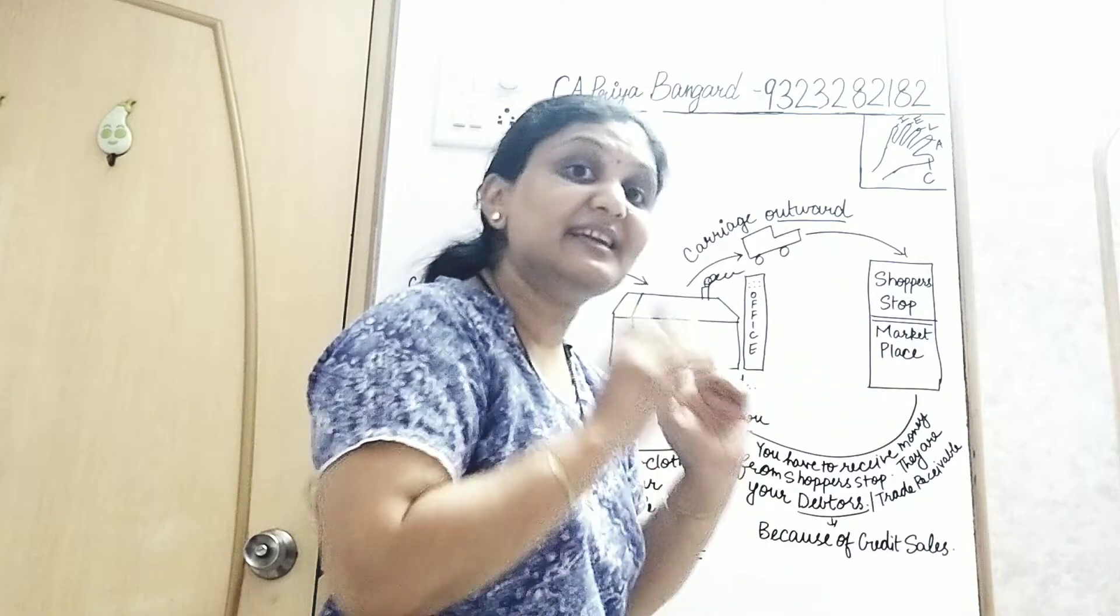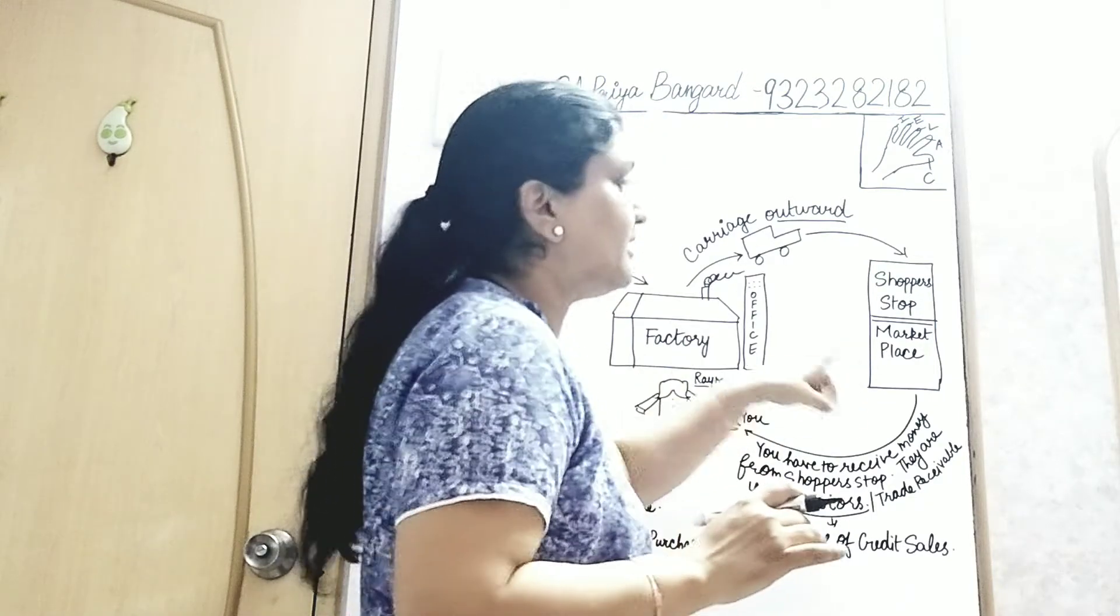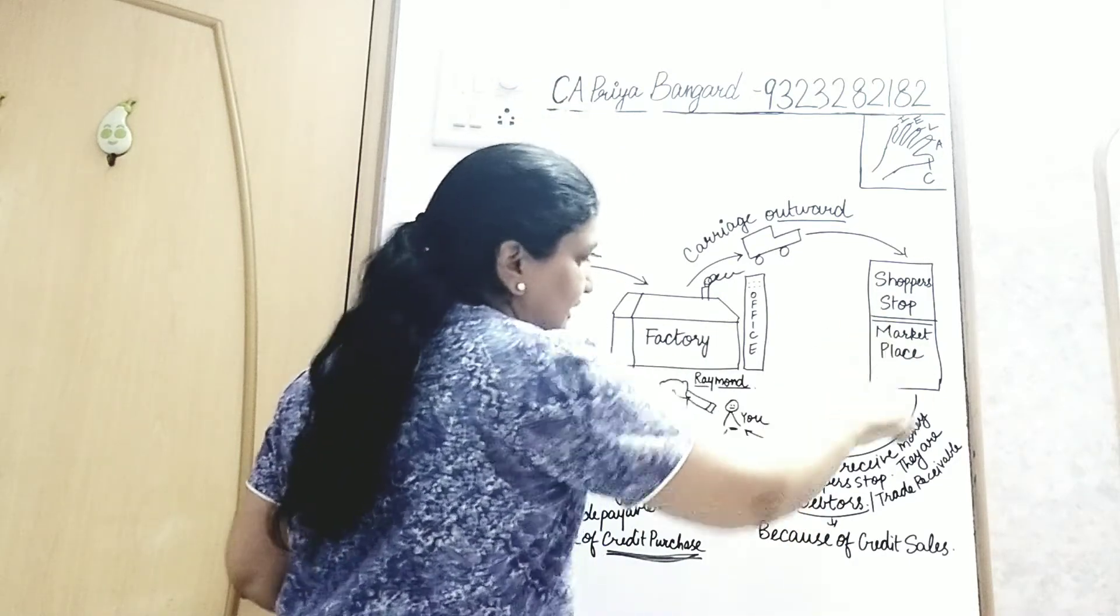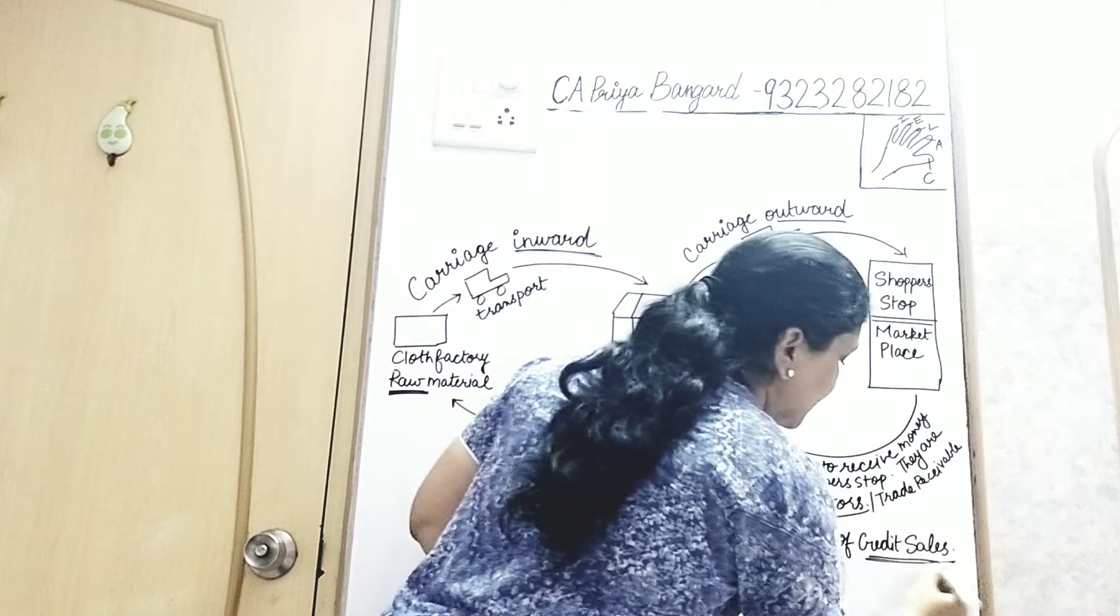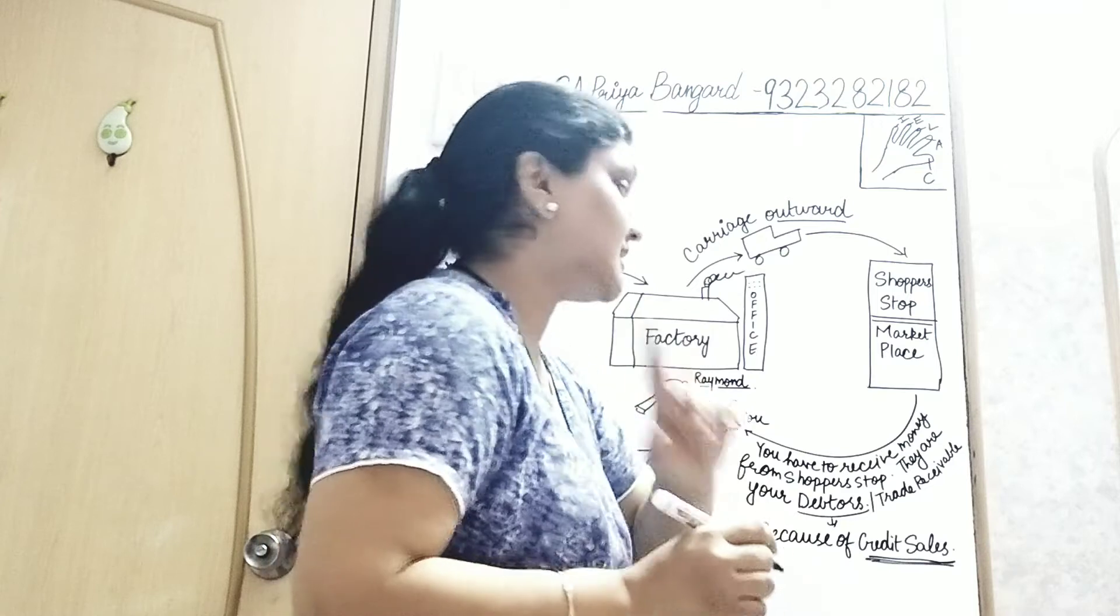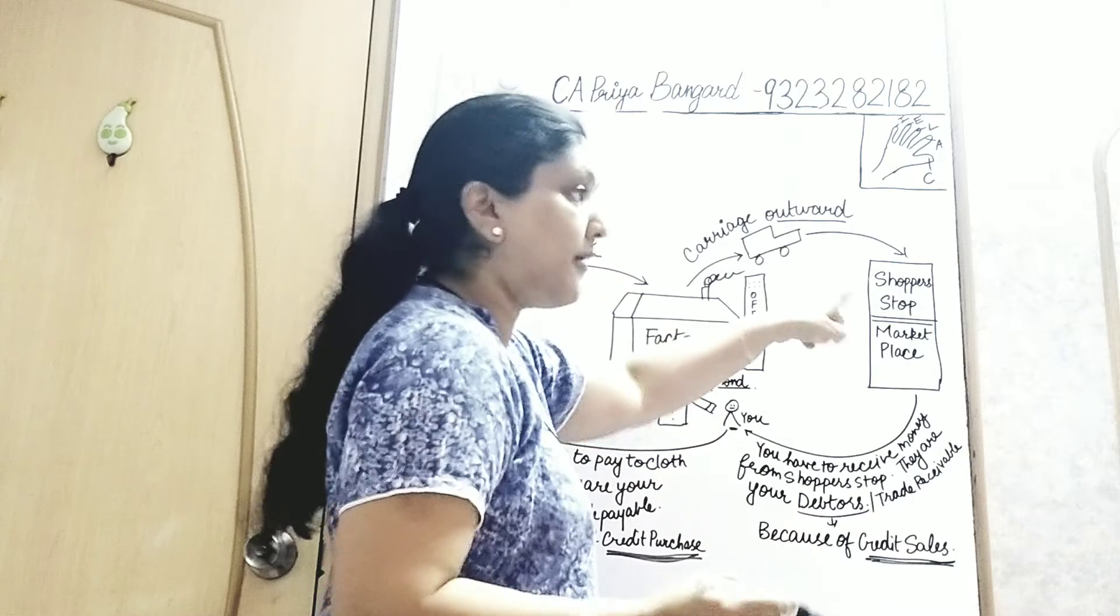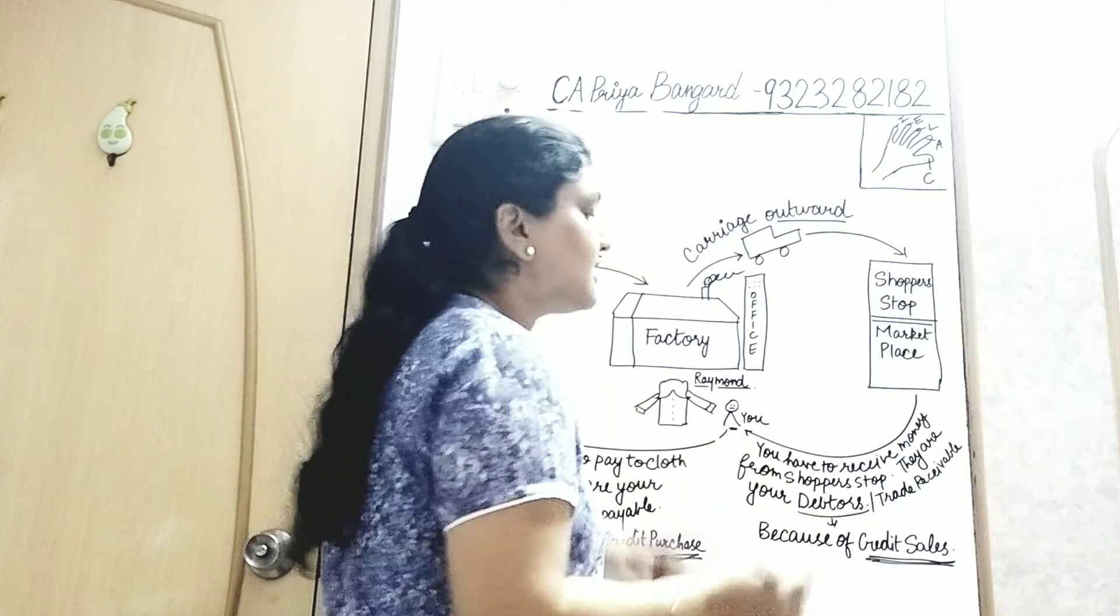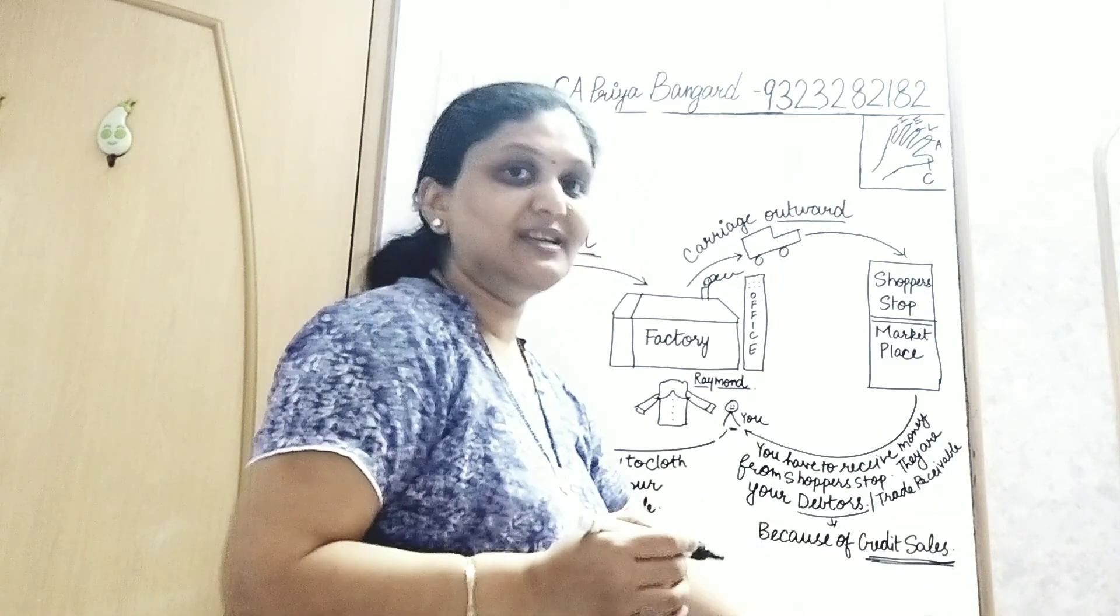What does that mean? You have given the goods and you have to take money from them - that is an asset. Debtors are assets for you - current assets, in fact. You have given the finished goods and you have to take money from them. Debtors arise because of credit sales. Yes, you definitely did sales to Shopper's Stop, but it was not cash sales, it was credit sales. So you have to receive money from Shopper's Stop. Because of credit sales, they are your debtors, and they are also known as trade receivables.